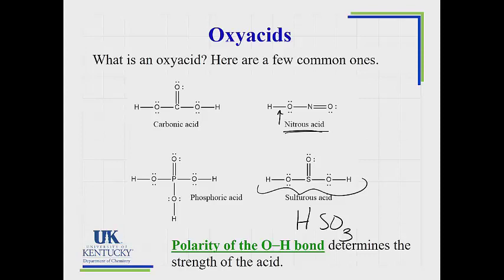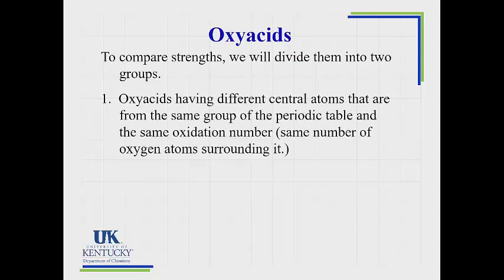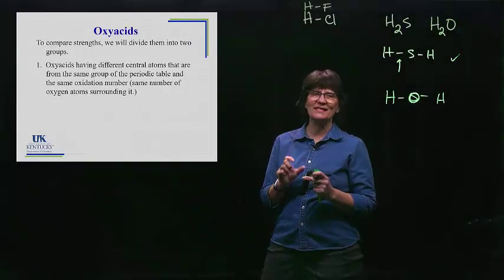This OH bond has to be broken. What does polarity mean? These two electrons are being shared by the hydrogen and the oxygen. The more unequal that sharing, the more polar the bond. What is going to drive the unequal sharing is a couple of different factors, and we have to divide them into two separate groups.